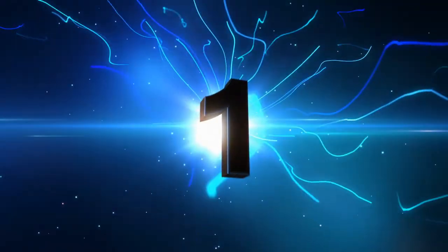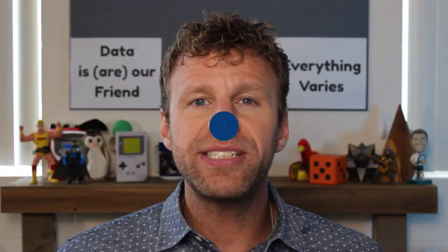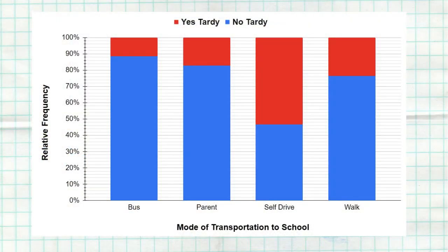Let's dive into the top 10 tips. Tip number one: be careful with proportions from categorical data. For example, if you take a look at this segmented bar graph, we see the breakdown of kids that were tardy and kids that were not tardy to school, and how they got to school — whether by bus, parent, self-drive, or walk.